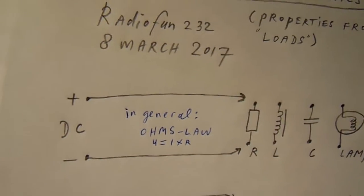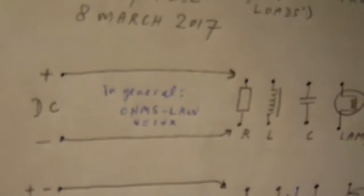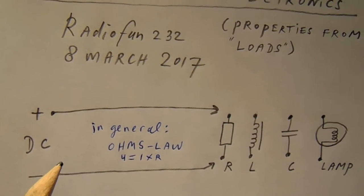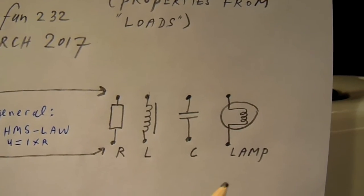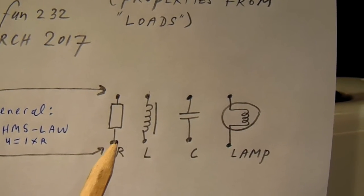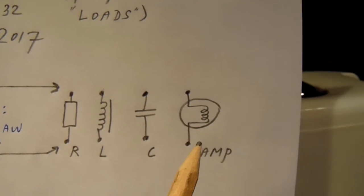And it's very interesting to know and see what happens when we connect to a DC source with a certain voltage and current these basic electronic elements: the resistor, the coil, the capacitor and the lamp.